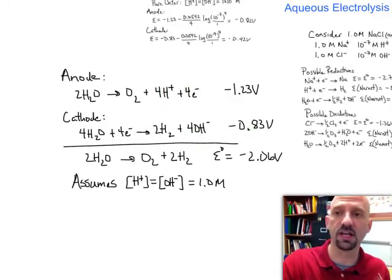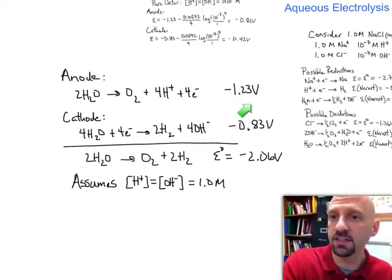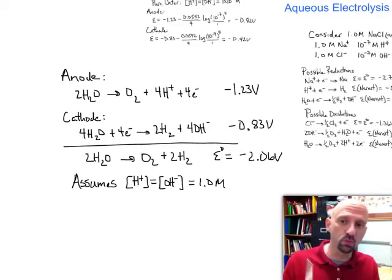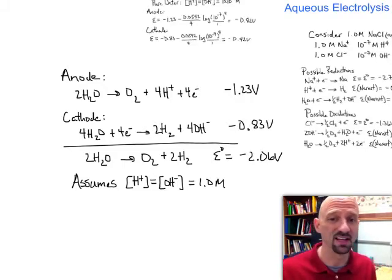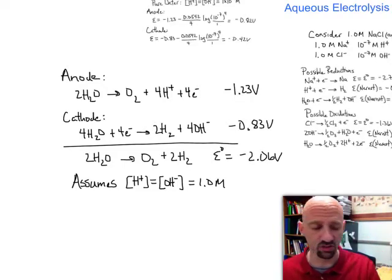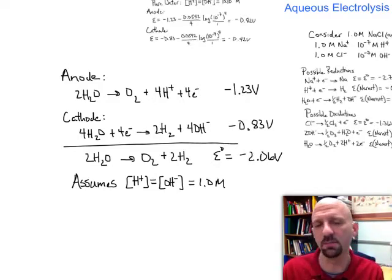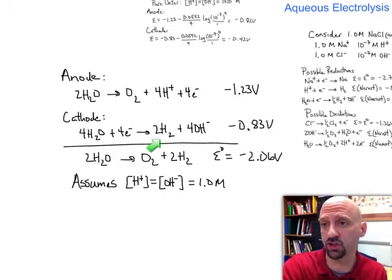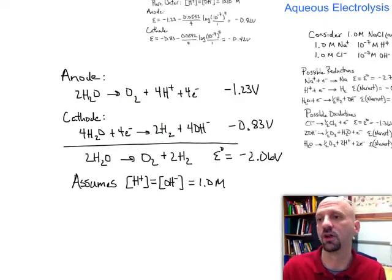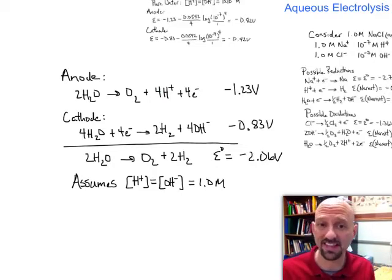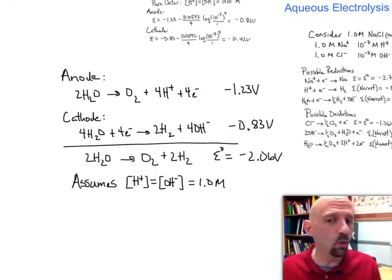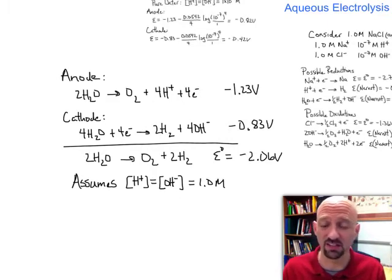Adding these two half-reaction potentials together gives a total of about -2.05 V, confirming the process is non-spontaneous. That means a double-A battery, which doesn't supply enough voltage, won't split water — you need something like a 9-volt battery. These standard potentials assume O2 and H2 are produced at 1 atm, and that H+ and OH- are present at 1 M — standard conditions.